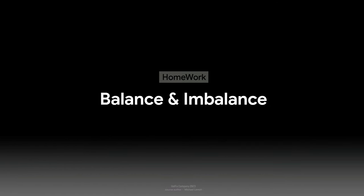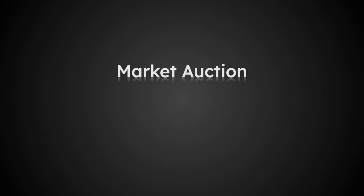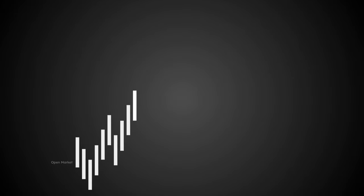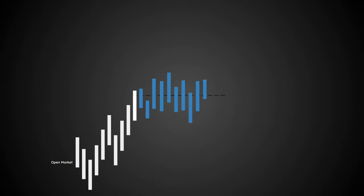Market auction, balance and imbalance. Financial markets are an endless two-sided auction where the price is determined by the negotiations between buyers and sellers. Stock and futures markets, like any other market, exist to facilitate trading. As a result, markets strive to reach a state of balance where there is relative agreement between buyers and sellers. Market behavior can be divided into two states: balance and imbalance.